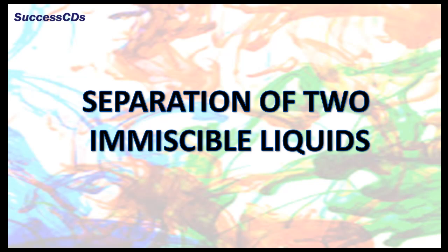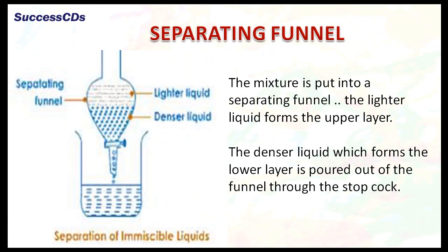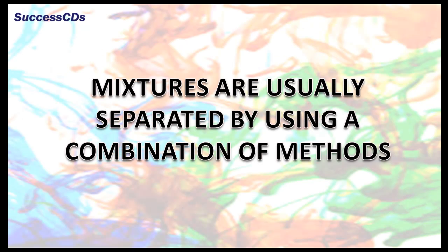Two immiscible liquids can be separated by using a separating funnel. The mixture is put into the separating funnel; the lighter liquid forms the upper layer, and the denser liquid which forms the lower layer is poured out of the funnel through the stopcock.